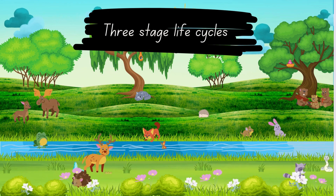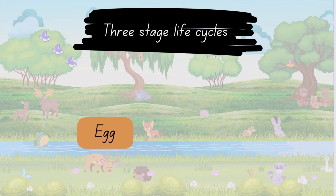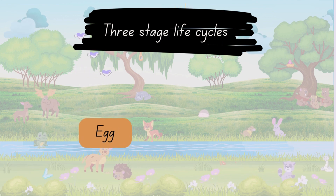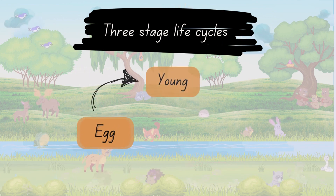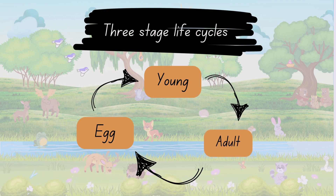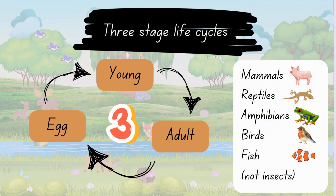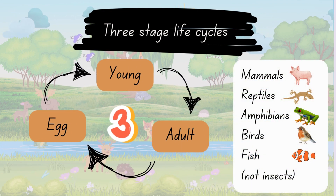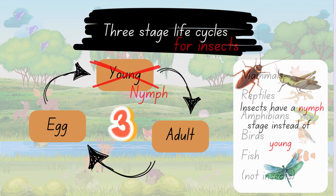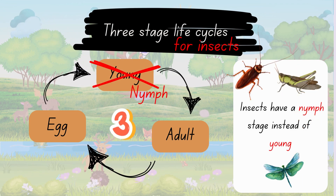With three stages, the stages in a three-stage life cycle are egg, young, adult. This is for all mammals, reptiles, amphibians, birds, and fish — like humans, frogs, and chickens. But insects are a little different.